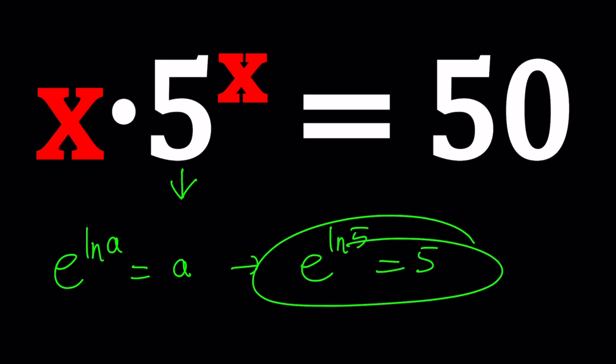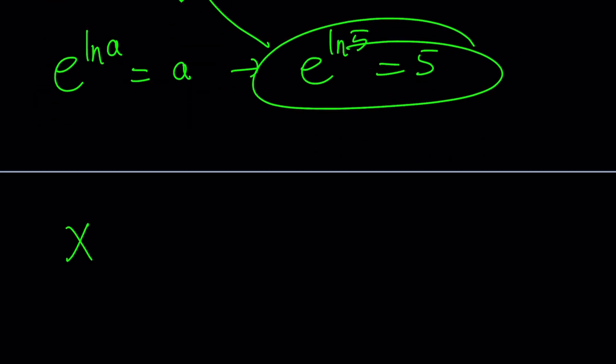Let's go ahead and replace the 5 with that in our equation and see what happens. So x times 5 to the power x, which will be replaced with e to the power ln 5, and then to the power x equals 50.